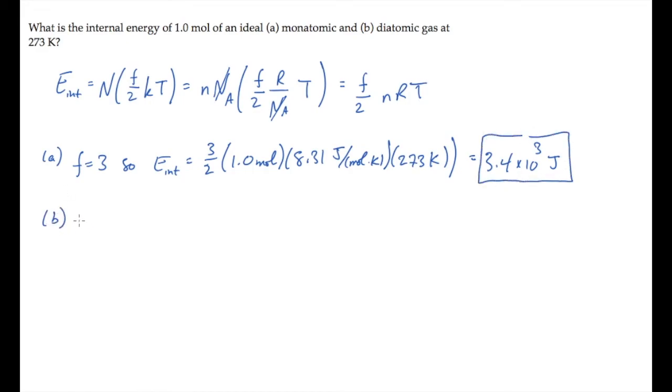In part B, the gas is diatomic. That means that there are five degrees of freedom, so the internal energy becomes five-halves nRT. This is five-thirds the value we just calculated, which works out to 5.7 times 10 to the third joules.